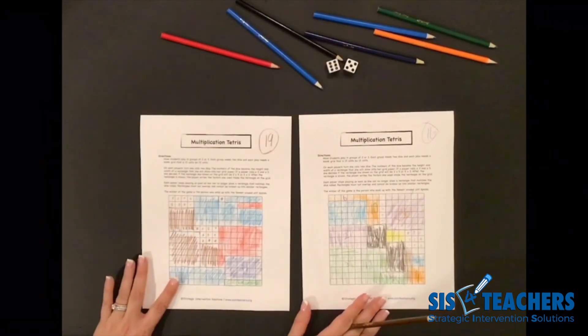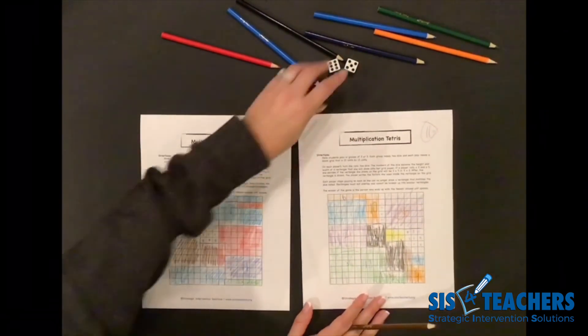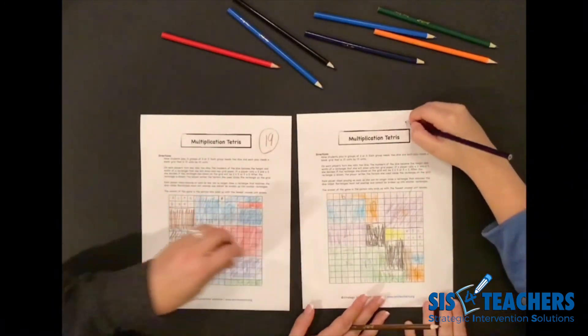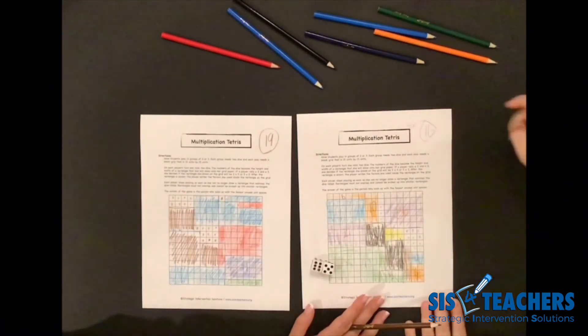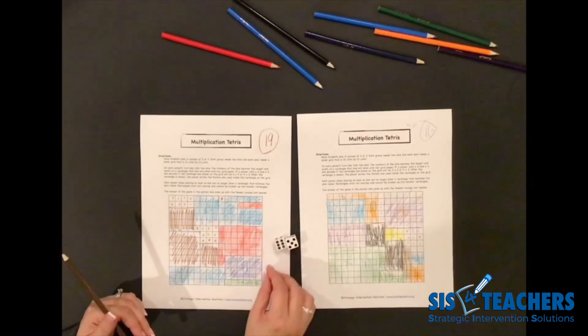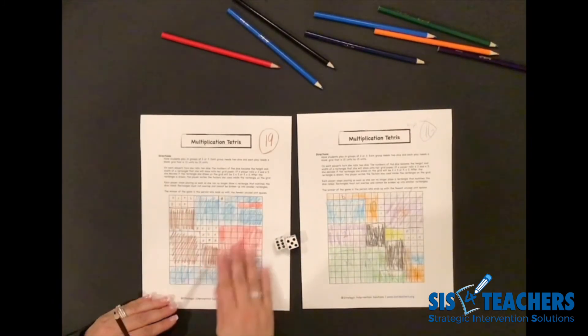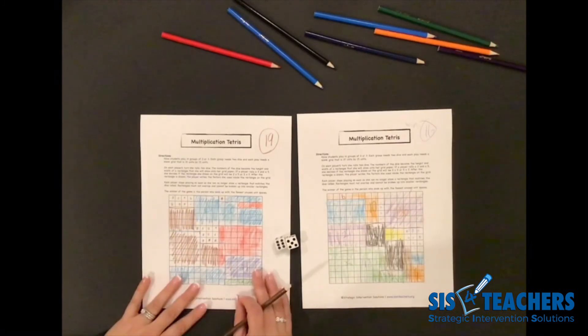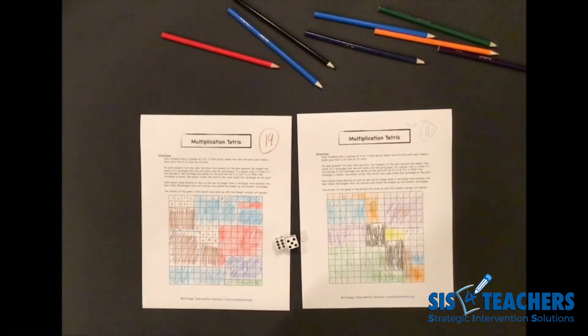This game is a ton of fun as you can see continuing play. You don't even necessarily need to pass the dice back and forth because you can just keep going until the grid is filled. The game comes to a halt for an individual person when there's no more area to fill up. We hope that you enjoy this game. It's a free download on our website on sis4teachers.org. Share with us to let us know what kind of fun you've been having at home or at school playing this game. Good luck!